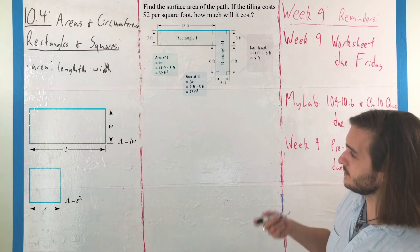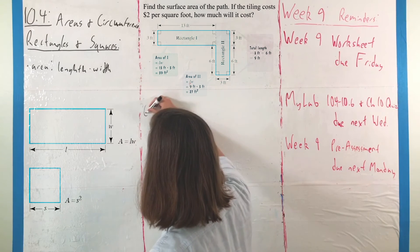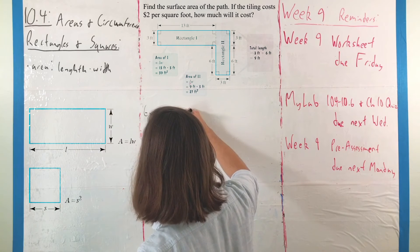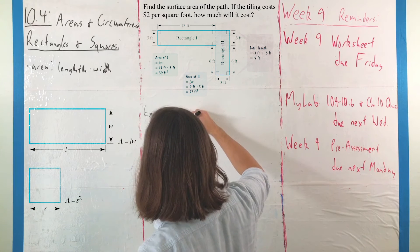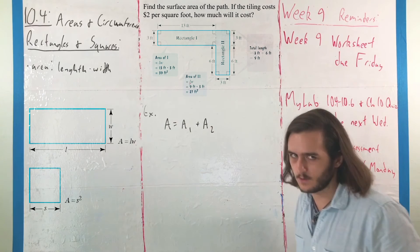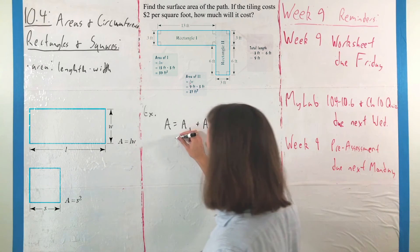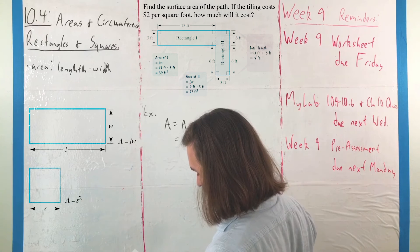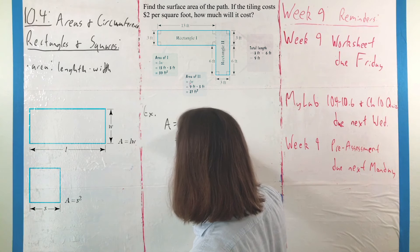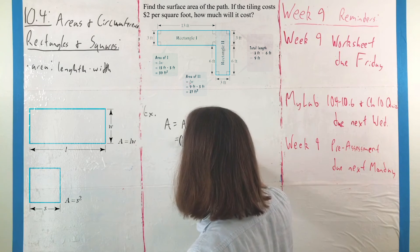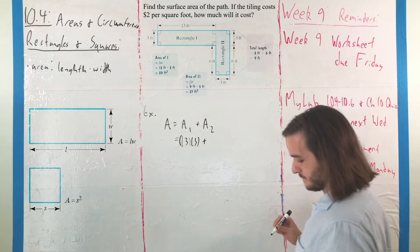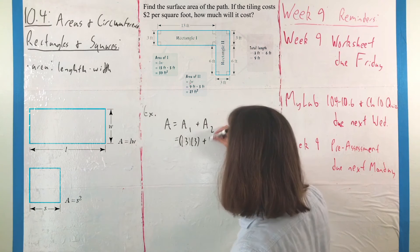From here, what we want to do is just find the area of each. To find our area, we can just find the area of one rectangle plus the area of the other—I'll call that A1 and A2. The dimensions of one of those rectangles is 13 feet by 3 feet, and the other is going to be 3 feet by 9 feet.